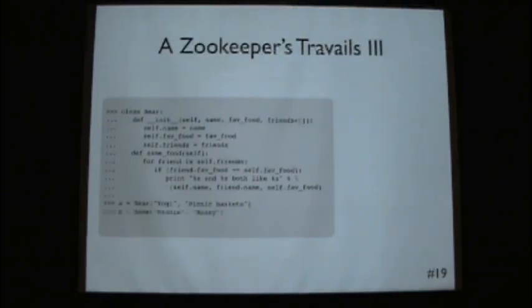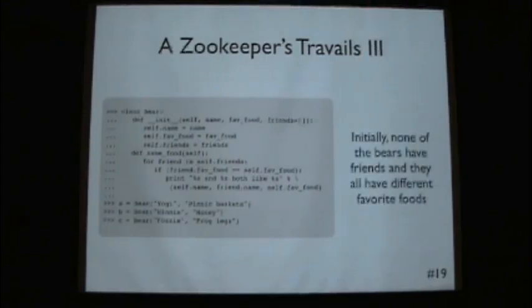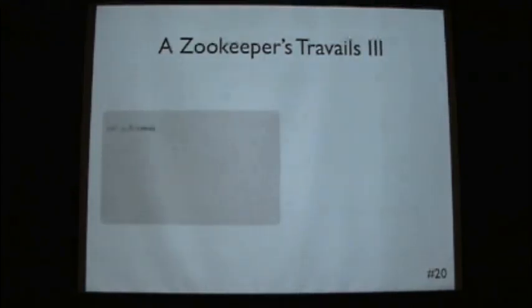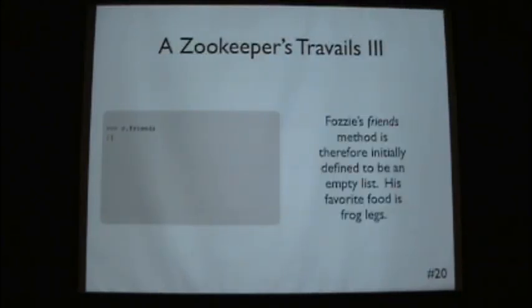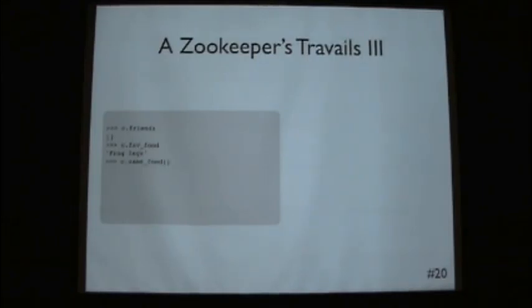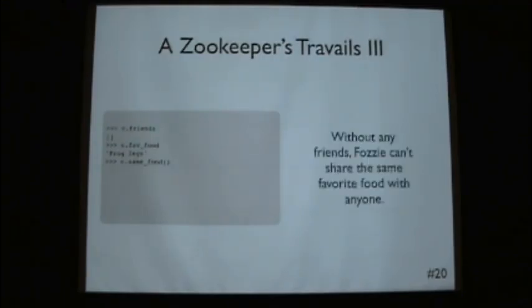Okay. So we can essentially eat Yogi, Winnie, and Fozzie. Here they each like their favorite foods are all different. C has no friends. So Fozzie has no friends. So it's an empty list. It's favorite food is frog legs. So when we do C dot sameFood, what should be returned? Nothing. It's empty. Because Fozzie has no friends.